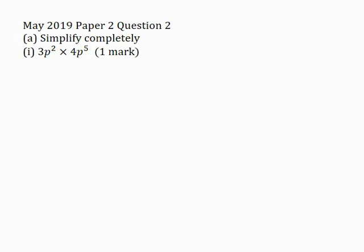In this video, I will be solving May 2019, Paper 2, Question 2. Part A: Simplify completely. Part 1: 3p squared multiplied by 4p to the power of 5, for 1 mark.